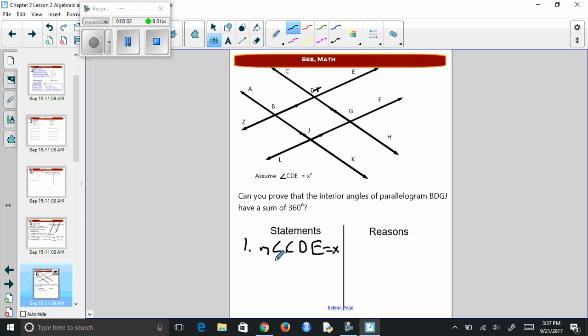And the lines are parallel. So BJ is parallel to DG. And BD is parallel to JG. And that's just given.